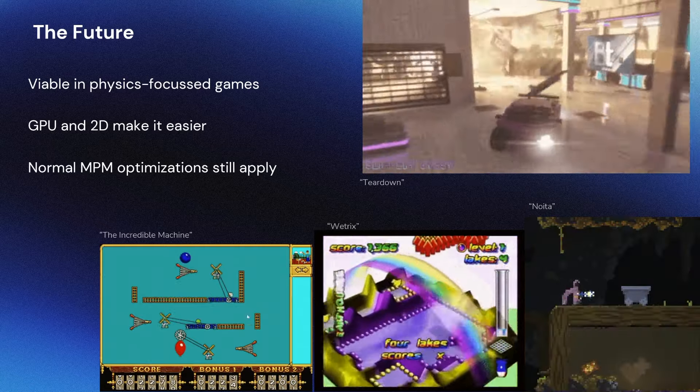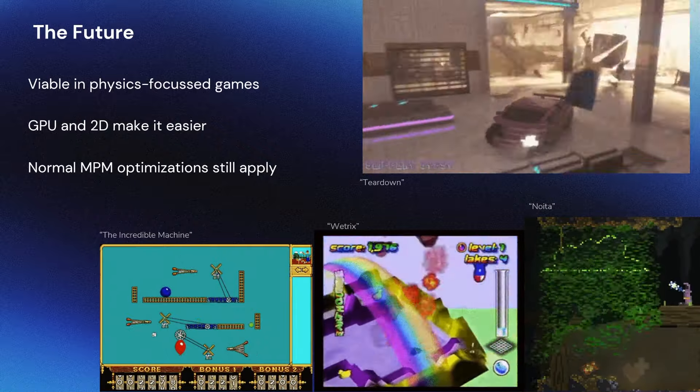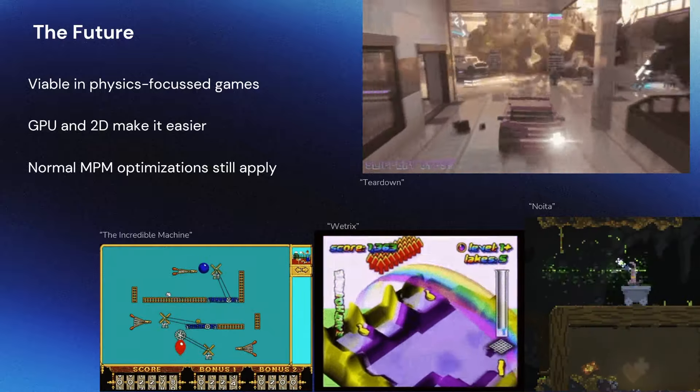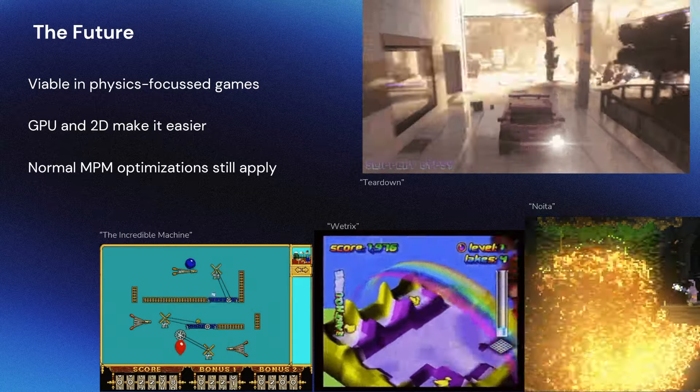However, there is a whole world of smaller indie games based on physics that are often 2D. I think with GPU execution and a bit of basic optimization, the techniques I presented here could be used today to make some fun gameplay. So, perhaps someone in that field will be able to make use of this work.